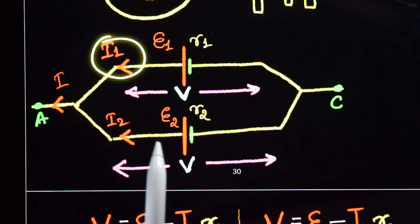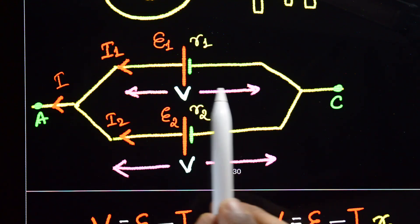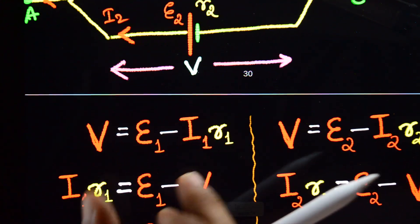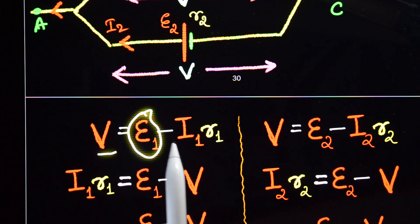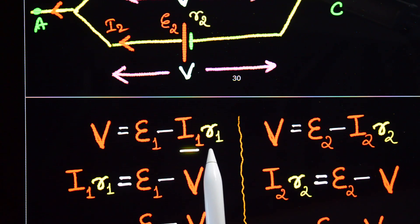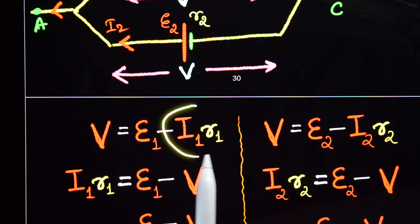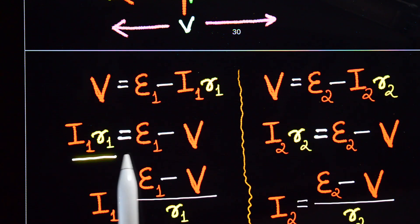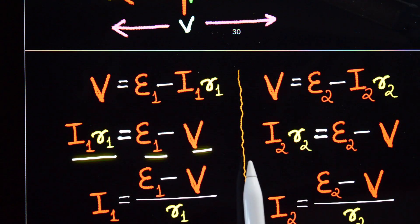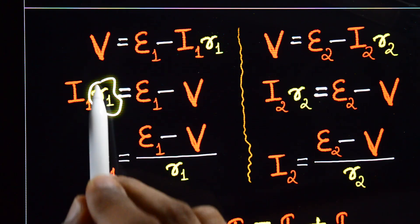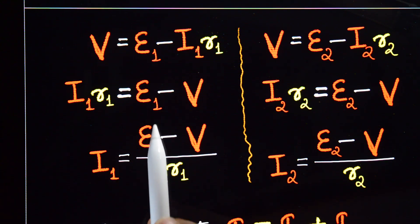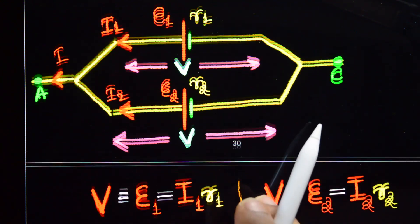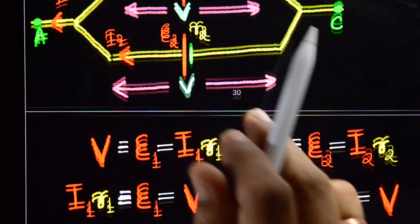The first cell gives a current i1 and the second cell gives a current i2. The potential difference across both cells is the same, v. We can write: v = e1 - i1·r1. Rearranging, i1 = (e1 - v) / r1, which is the current through the first cell.